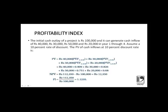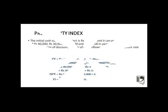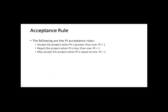For the Profitability Index example, consider a project with one lakh of investment and various cash inflows. You convert each cash flow into its present value, calculate the NPV, and then divide the total present value by the cash outflow. This gives a value of approximately 1.1. The acceptance criteria for PI: if PI is greater than 1, accept the project; if less than 1, reject it; if PI equals 1, it is indifferent.